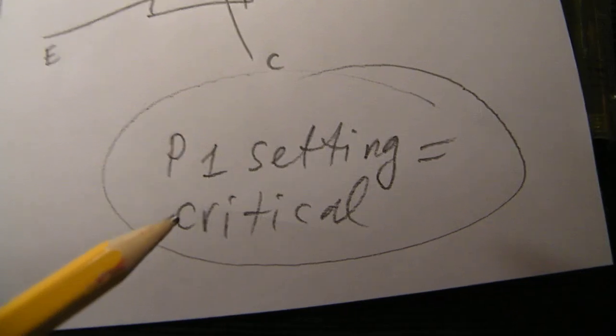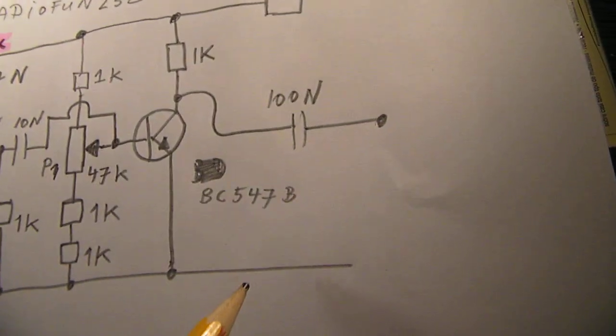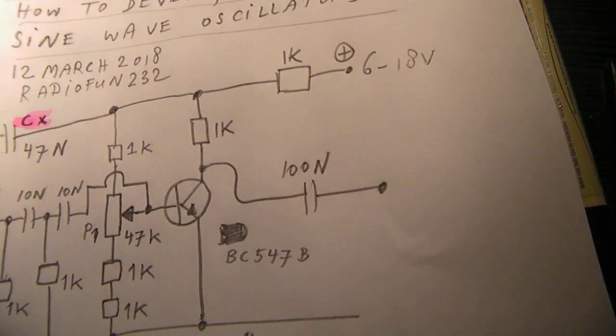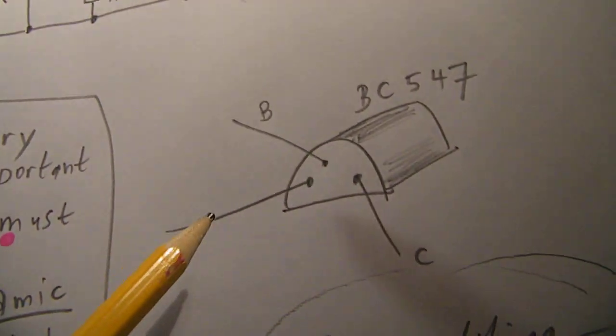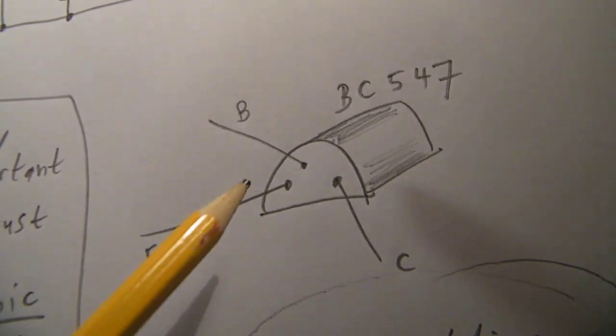So connect your scope to the output here. This is the output. This is by the way the minus, this is the positive. I use a BC547B transistor with a good amplification, say 300 or so.